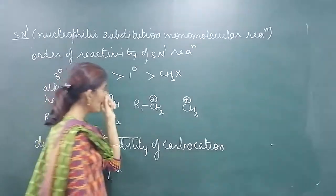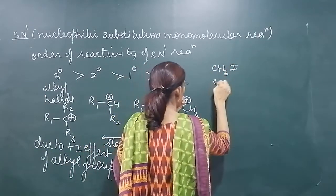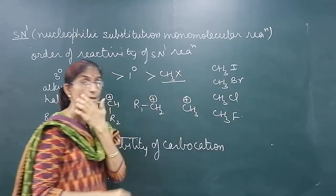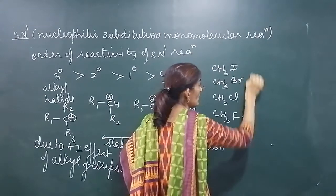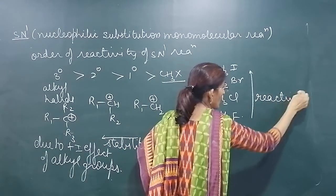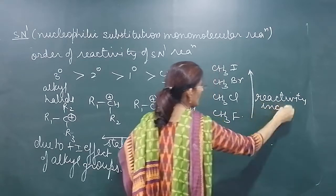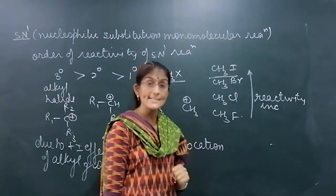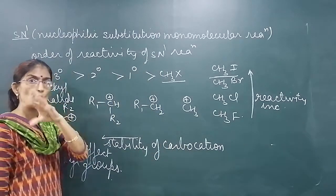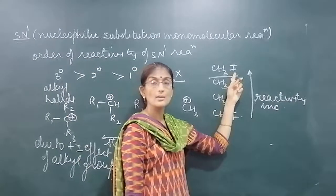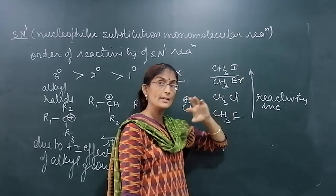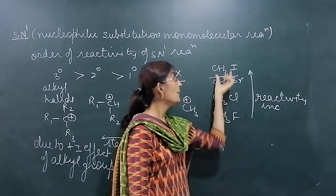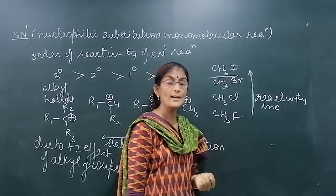Now suppose we have methyl iodide, methyl bromide, methyl chloride, and methyl fluoride — which will undergo the reaction faster? It is methyl iodide which will react faster; reactivity increases in the order: F < Cl < Br < I. Why does methyl iodide react faster? Because iodine is bigger in size, so it will leave easily. The halogen must leave so the nucleophile can attack. Iodine is a better leaving group because its size is bigger, so it leaves early and the nucleophile can attack easily. Order of reactivity: methyl iodide is most reactive, then bromide, then chloride, then fluoride.